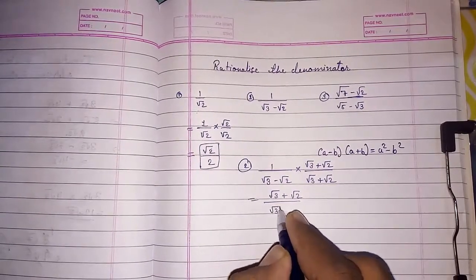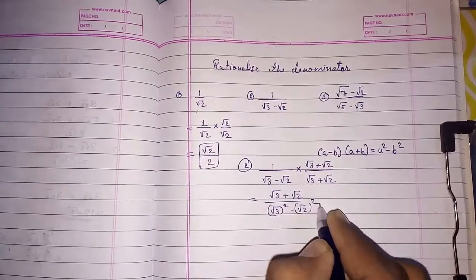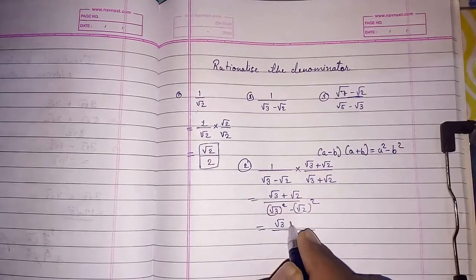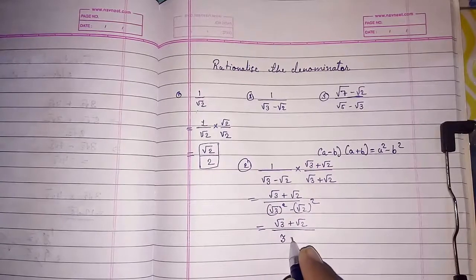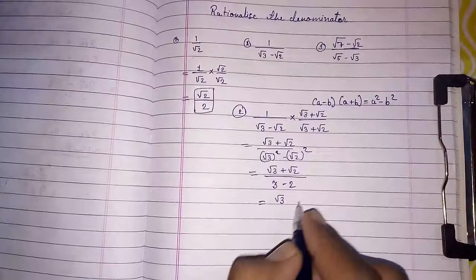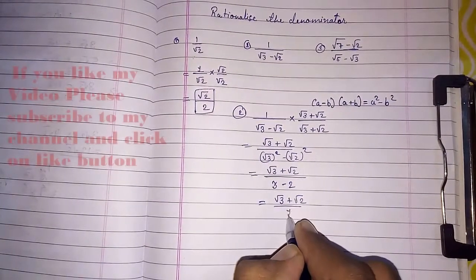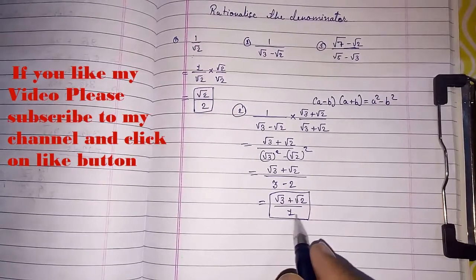you will get root three whole square minus root two whole square. So, we come to know that in numerator that same number and in denominator root three square means three minus two. So, root three plus root two upon one. So, this is your final answer. If you don't want to write one, then also it's okay.